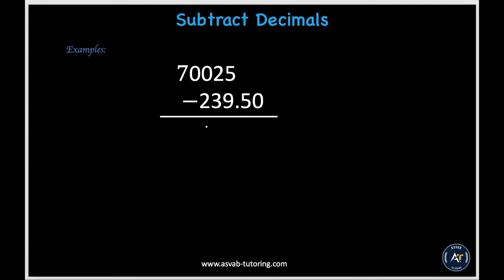In this last example, we're subtracting 70,025 minus 239.50. We have a whole number and a decimal number, but we know 70,025 has a decimal point at the end of it, and we can put zeros to substitute the tenths and hundredths places. In the hundredths place, 0 minus 0 gives 0. In the tenths place, 0 minus 5 is a problem since 0 is less than 5, so we borrow 10 from the ones place. The ones digit becomes 4, the tenths digit becomes 10, and 10 minus 5 is 5.